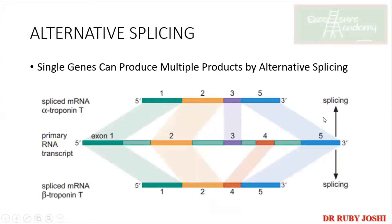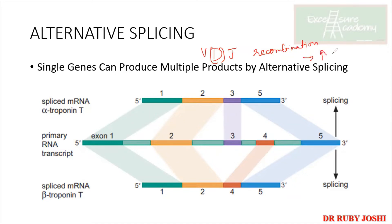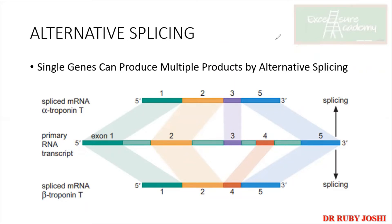Now let's discuss alternative splicing. It is the same gene giving a transcript, and depending on differences in the splicing, that transcript can result in production of different types of proteins. For example, in the figure showing the primary RNA transcript with exons 1, 2, 3, 4, and 5, if splicing gives sequences 1, 2, 4, and 5 — skipping exon 3 — this results in beta-troponin T.